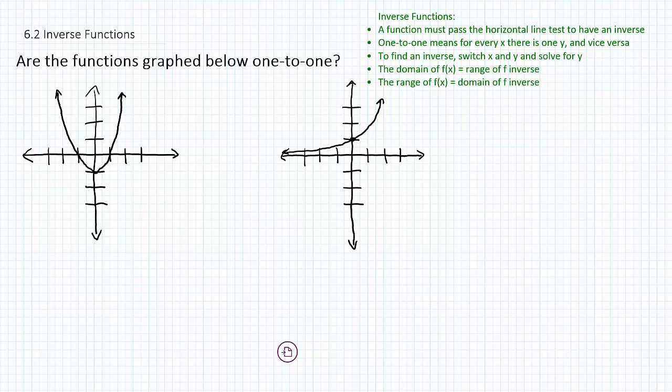So look at our first example here, this parabola-looking graph. If I run horizontal lines through it, I can see it fails the test right away. Here are two intersections. We're only allowed to have one intersection for a one-to-one test, so it means that this is not a one-to-one function.